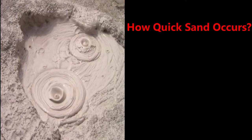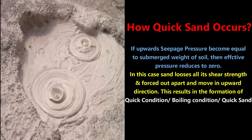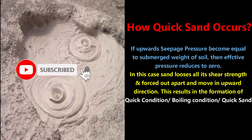How does quicksand condition occur? Quicksand condition occurs when there is a seepage pressure acting in the upward direction. Seepage pressure is a pressure exerted by the water on the soil through which it percolates. If this upward seepage pressure becomes equal to the submerged weight of the soil, then the effective pressure reduces to zero.